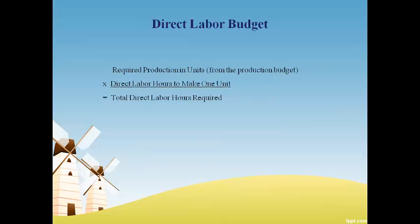Direct labor is a product cost, so it begins with the number of units to be produced. The number of units multiplied by the quantity of hours required to make one unit gives the total direct labor hours necessary to make all products. Multiplying the quantity of hours needed by the cost per hour gives the estimated direct labor cost. This is done for each type of direct labor. The direct labor budget typically assumes that employees will be paid in the period the work is done.